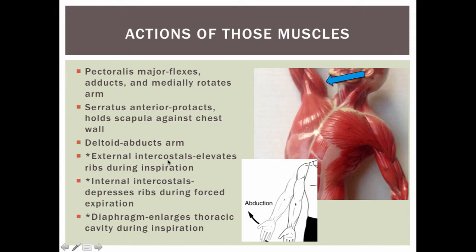The external intercostals elevate the ribs during inspiration, and the internal intercostals depress the ribs during forced expiration. Think of the handles on the outside of a bucket — the external intercostals lift those handles when you breathe in, and the internal intercostals push those handles down when you breathe out. Forced expiration is when you're doing some sort of exercise and breathing hard. The diaphragm helps to enlarge the thoracic cavity during inspiration.